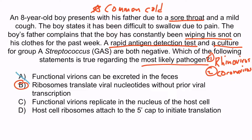Choice A is wrong because rhinovirus is acid labile — it gets killed as soon as it reaches stomach acid, so functional virions are unlikely to make it to the feces unharmed. Choice C is wrong because RNA viruses all replicate inside the cytoplasm, not the nucleus — the only exceptions are influenza and retroviruses.